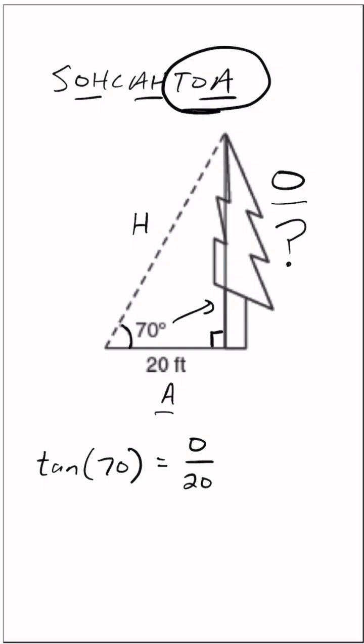Now we're trying to solve for O. To get O by itself, we have to multiply by 20 on both sides. When we do that, we'll have 20 tangent 70 equals our opposite. When we calculate that, we should get 54.95 feet, and that is our answer.